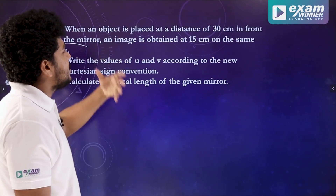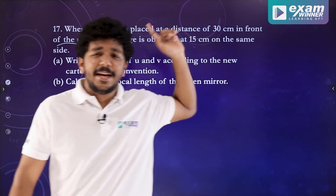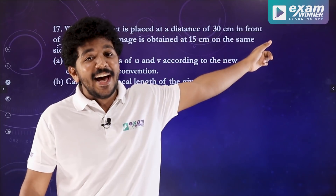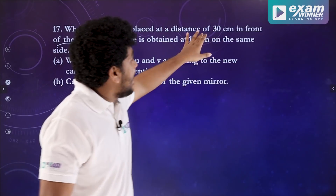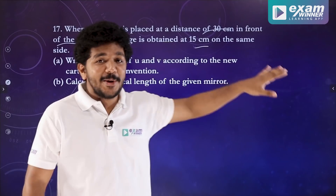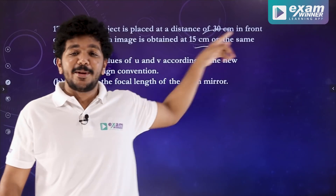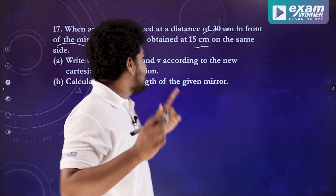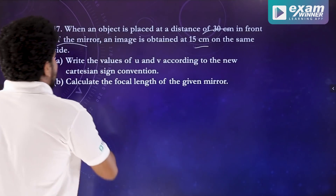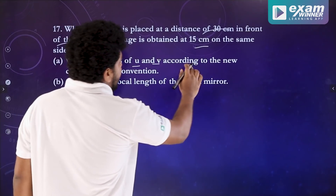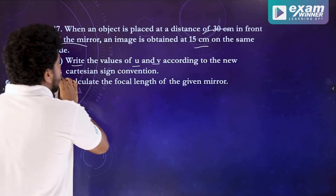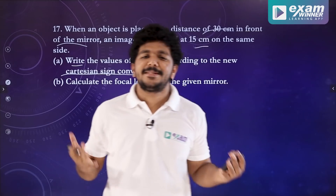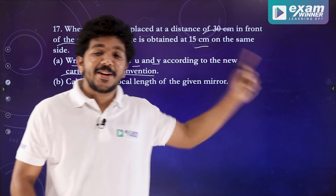When the object is placed at a distance of 30 cm in front of a mirror, an image is obtained at 15 cm. This is the same question I am discussing. The image is on the same side. Write the values of u and v according to the new Cartesian sign convention.